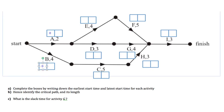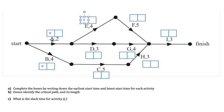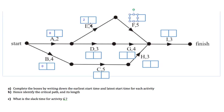Likewise, Activity B comes from the start, so its earliest start time is zero. Activity E has to wait for Activity A to finish, so its earliest start time is two, because A has a duration of two. Activity F, following this path a bit further, has to wait for E to finish. If E can start at two and E takes four, then F will be able to start at six.